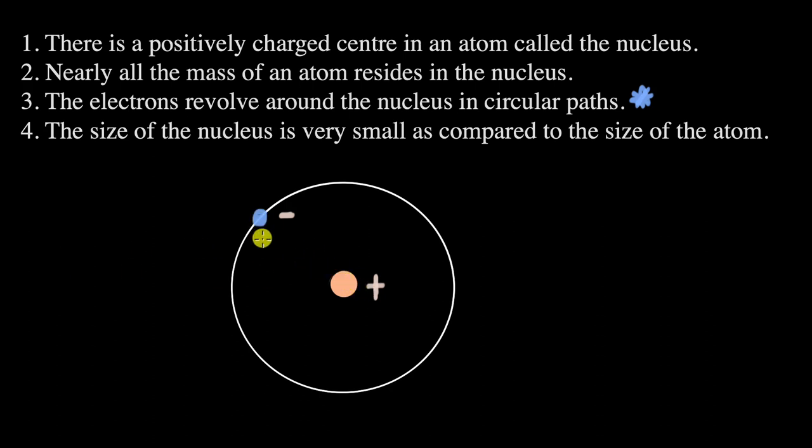So there will be a force towards the center which will be experienced by this electron. And if there is a force towards the center, there will be an acceleration towards the center. And that is also something that you will learn in physics in much more detail. That every object that is moving in a circular path, even if it is moving with the same speed, is undergoing an acceleration. And why is that? Because they can say that acceleration is really change in velocity per unit time.